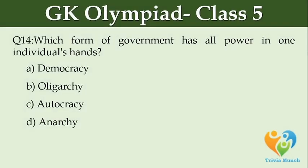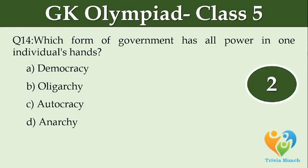Which form of government has all power in one individual's hands? Option A: Democracy. Option B: Oligarchy. Option C: Autocracy. Option D: Anarchy.